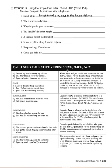Using causative verbs 'make,' 'have,' and 'get.' These can express the idea that X causes Y to do something. Their meanings are similar but not identical. Compare: (a) 'I made my brother carry my suitcase' — he had no choice, I forced him. (b) 'I had my brother carry my suitcase' — I politely asked him. (c) 'I got my brother to carry my suitcase' — I persuaded/managed to convince him.